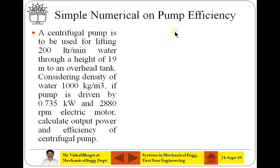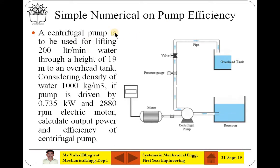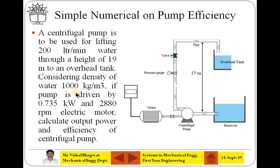The next problem is based on pump efficiency, and here a centrifugal pump is used. Once you understand the problem, draw the schematic figure so that you can understand the power flow and how power is transformed. The centrifugal pump is used for lifting 200 liters per minute of water through a height of 19 meters to an overhead tank. Considering density 1000 kg/m³ for water, the pump is driven by an electric motor where power is 0.735 kW running at 2880 RPM.